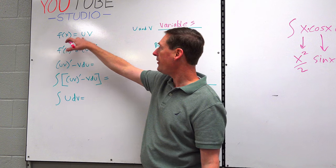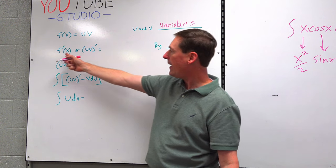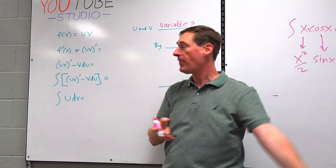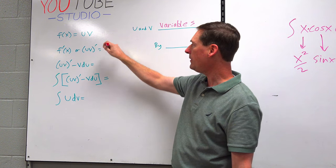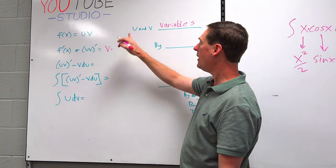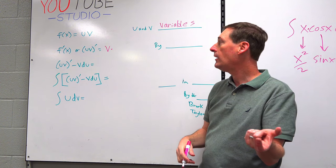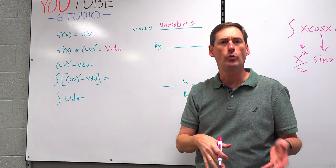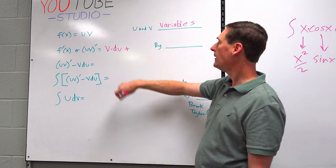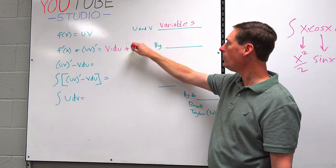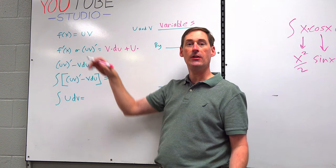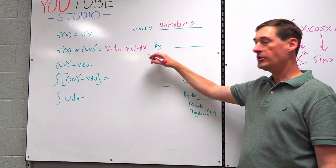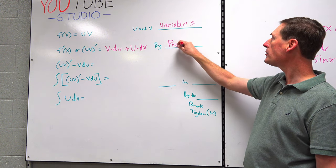If f of x is variable times variable, how would you take the derivative — how would you find f prime of x, or uv quantity prime? You'd take the second one, leave it the same — v — times the derivative of the first, which is du. Plus, the first term stays the same — u — times the derivative of the second, which is dv. That was done by the product rule, of course.